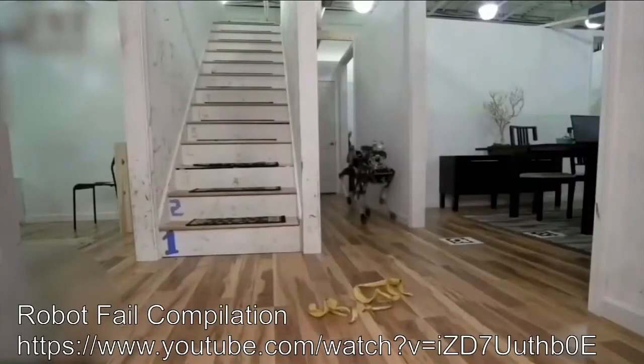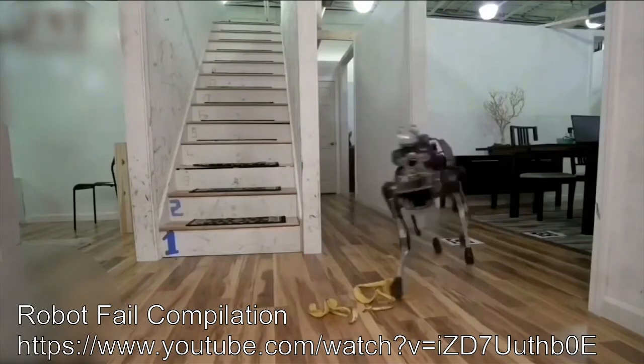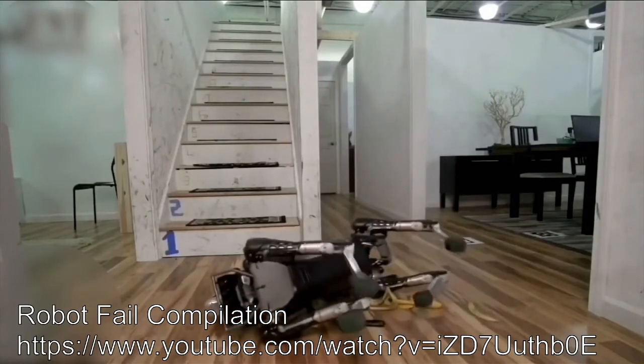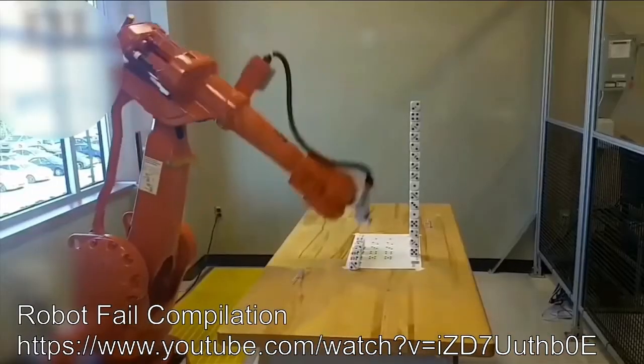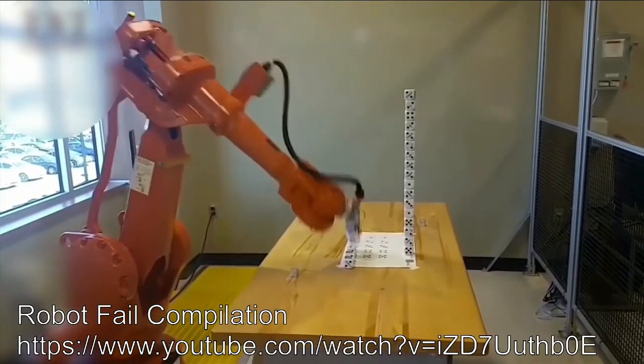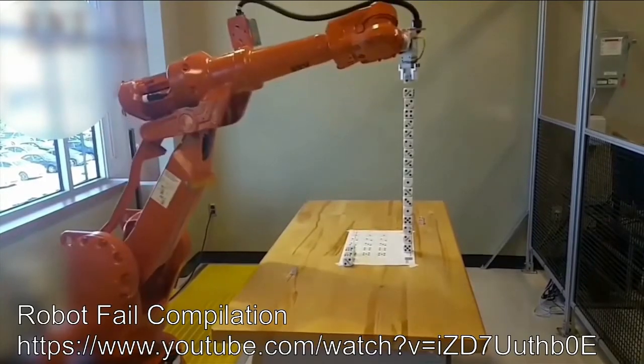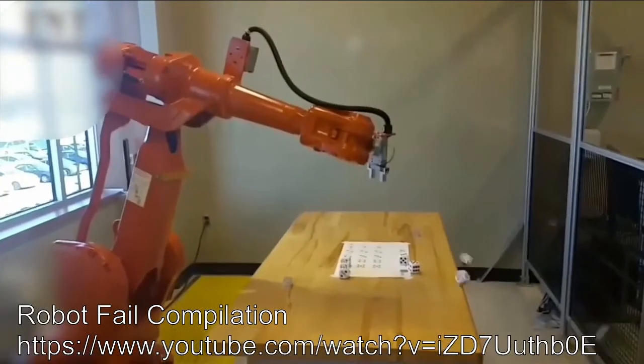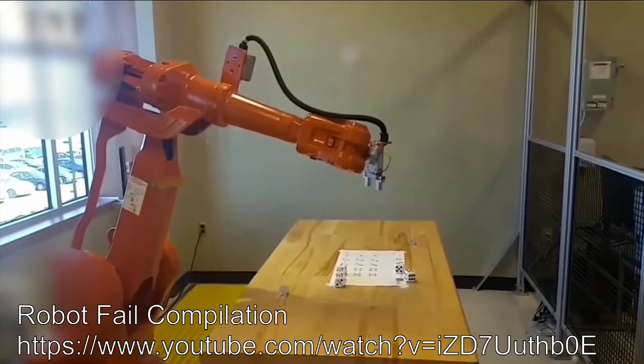But for all the talk about robots taking our jobs, we're still pretty far away from that. In fact, robots are usually still pretty clumsy and inflexible. For example, an industrial manipulator can pick and place components with amazing precision and without ever getting bored. But if the environment changes only slightly, the machine usually fails epically.